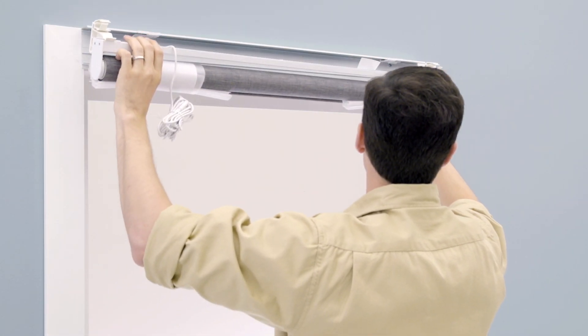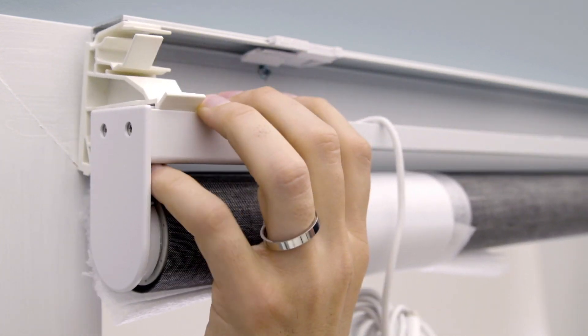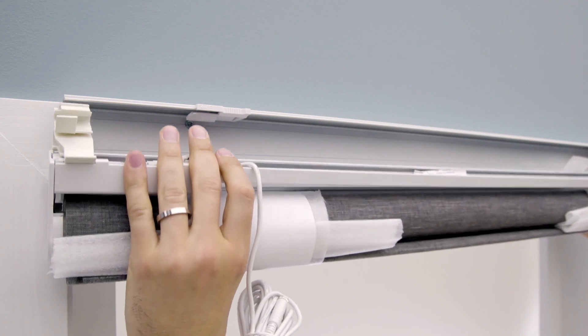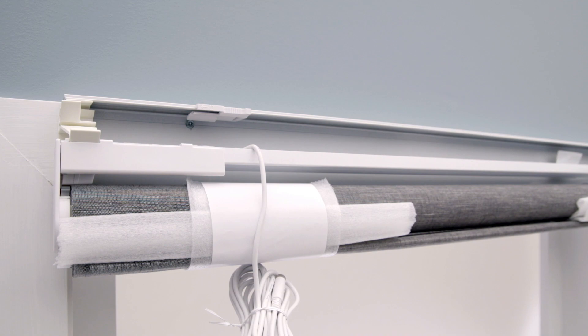Attach the shade by resting the bottom rear part of each support bracket, bottom first, on the lower shelf of the mounting rail. Then push the top of the shade into the mounting rail, locking all support brackets into the mounting rail. You'll hear a click.